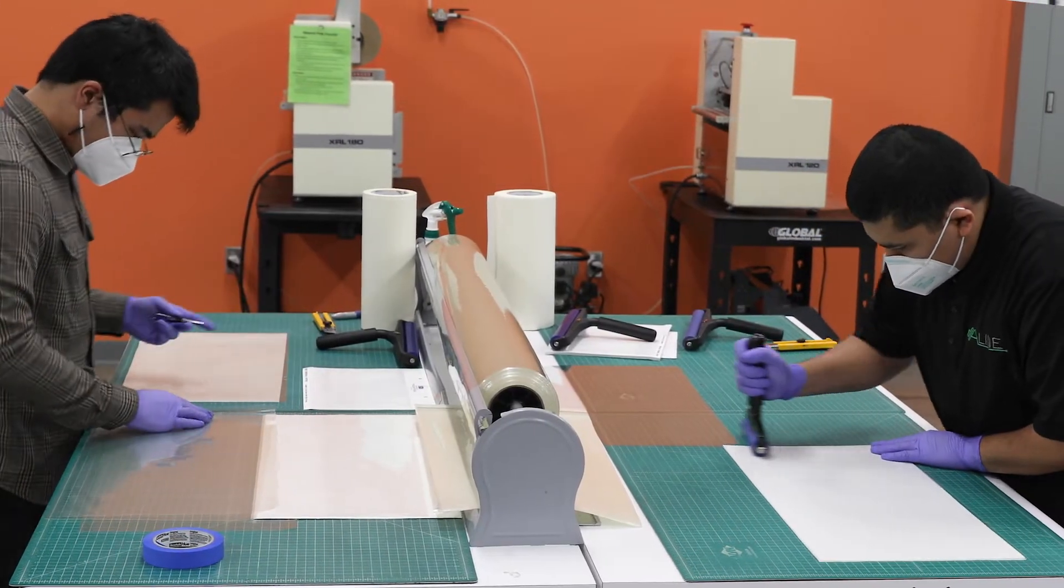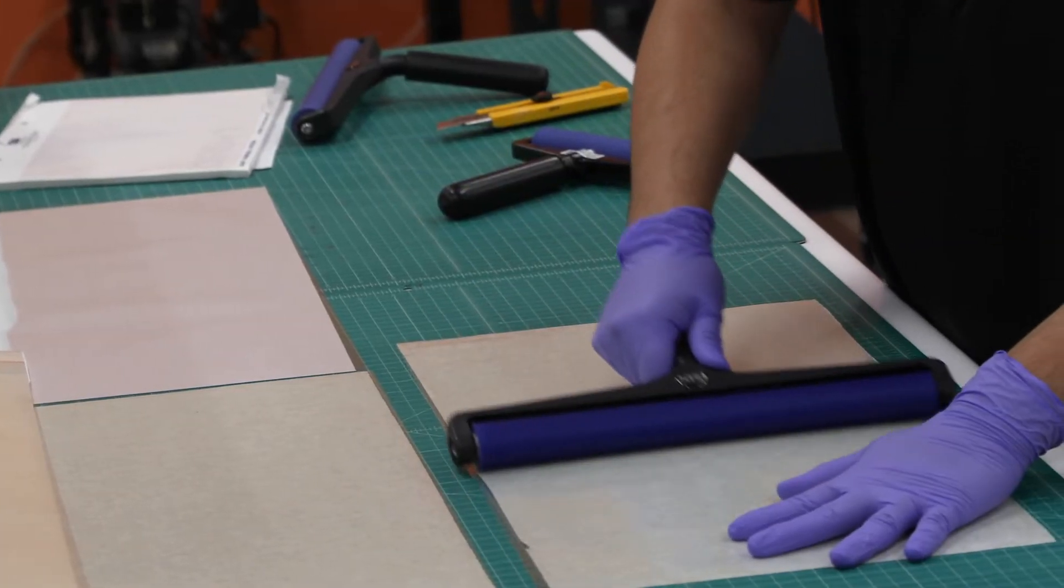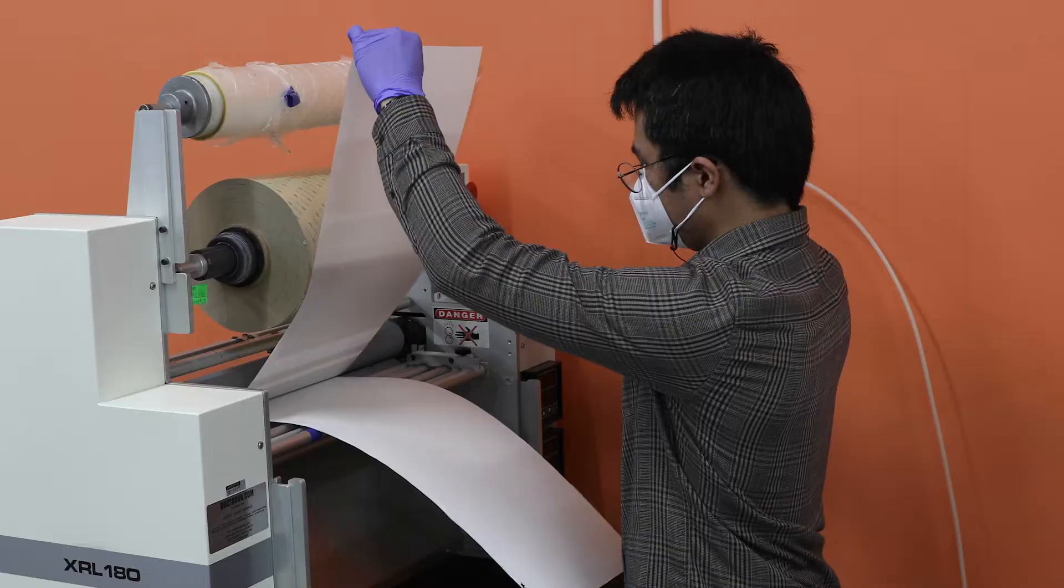Typically, microfluidic prototyping shops are limited by a 4-inch diameter wafer. We have batch sizes that are about 15 times larger than that, so right off the bat, we're able to produce larger quantities quicker and more reliably.